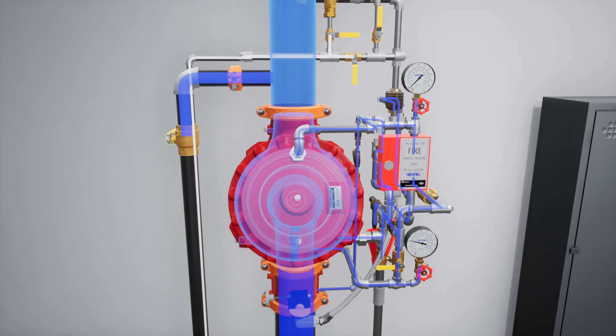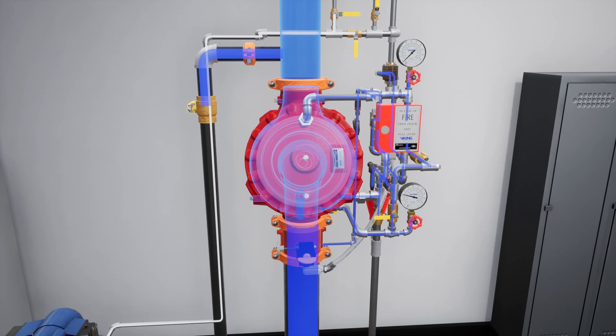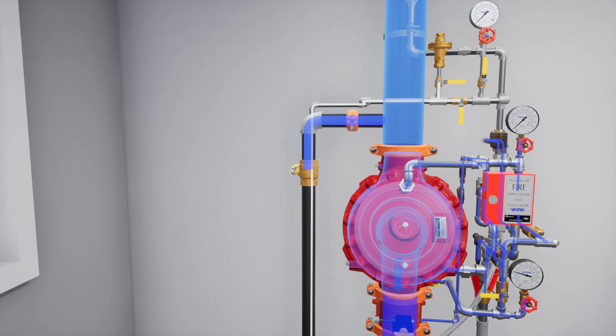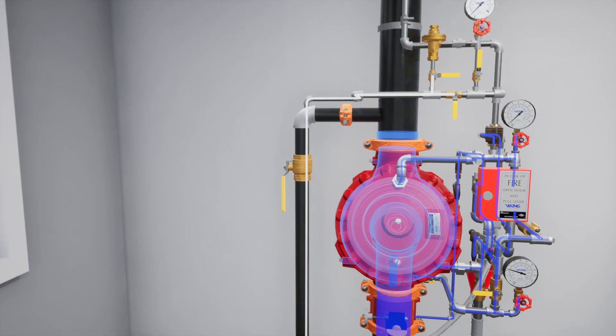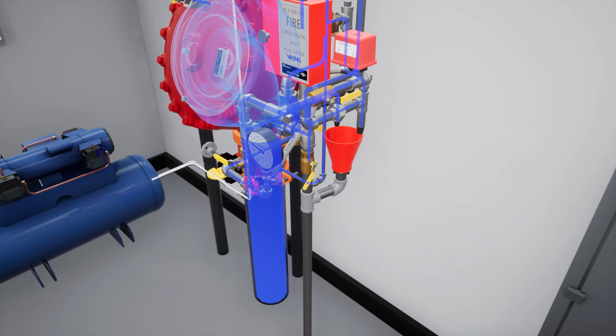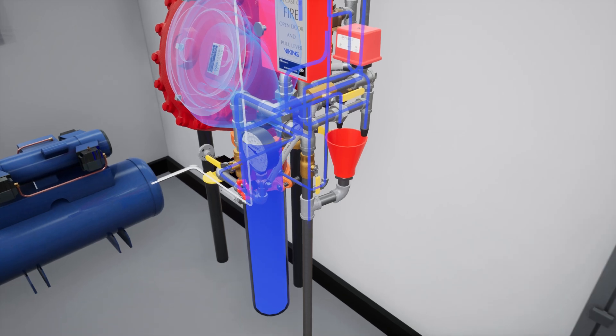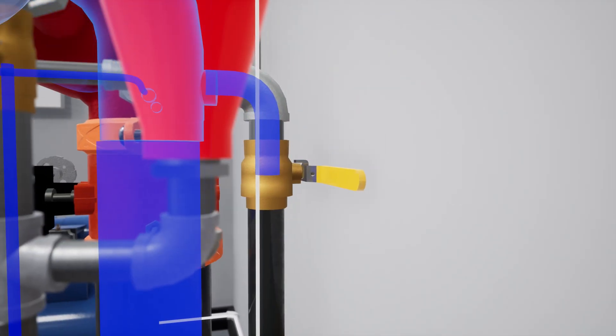Now you will need to drain down the system. Start by opening the main drain followed by the auxiliary drain. Finally, let's open the flow test valve and then wait for the system to drain.